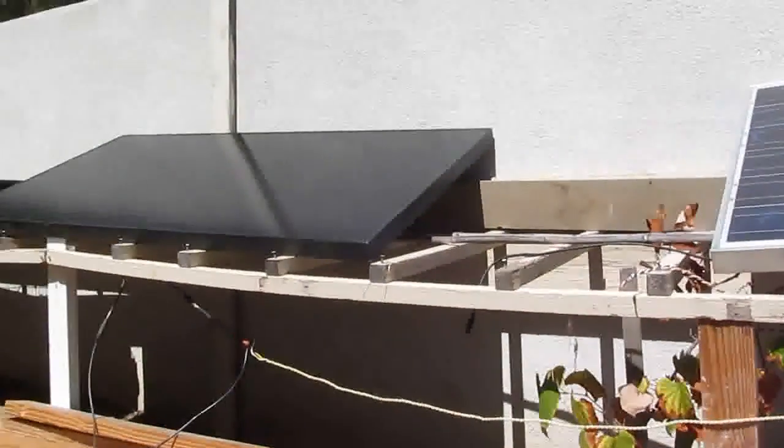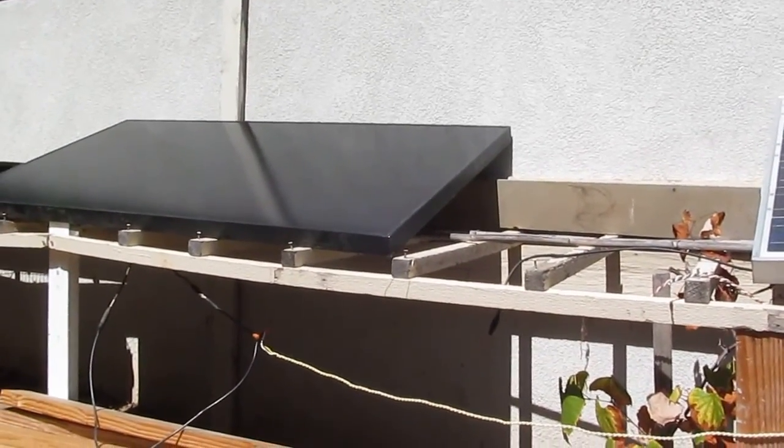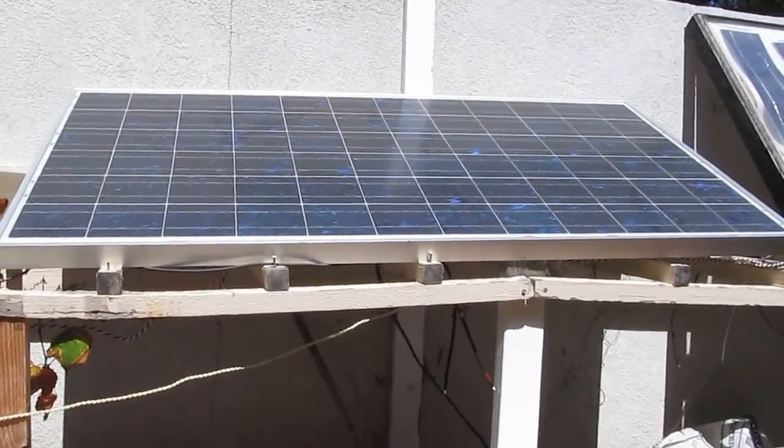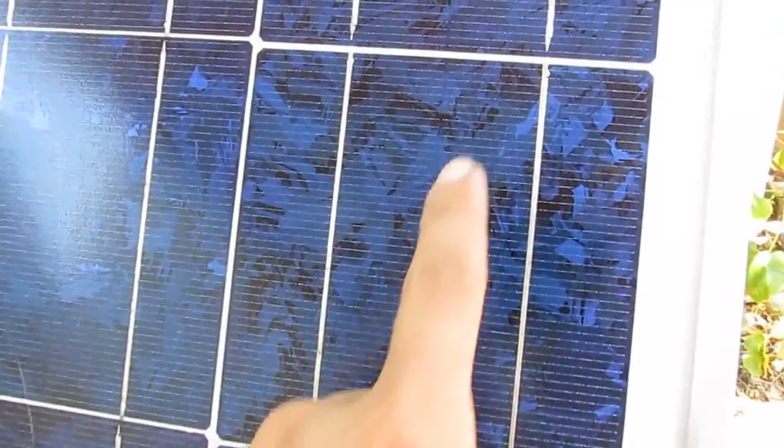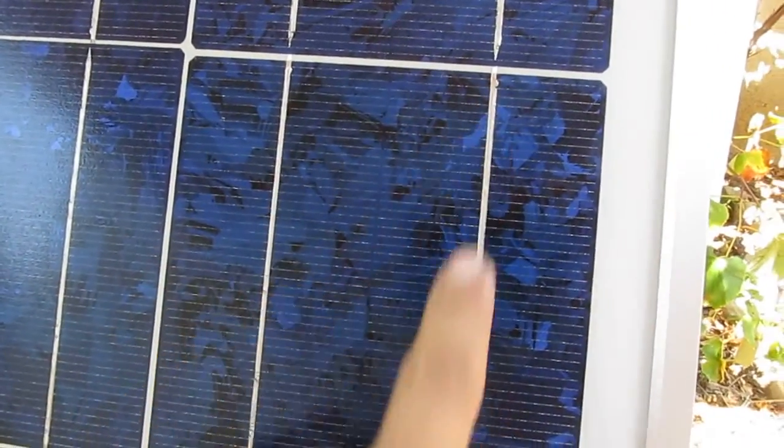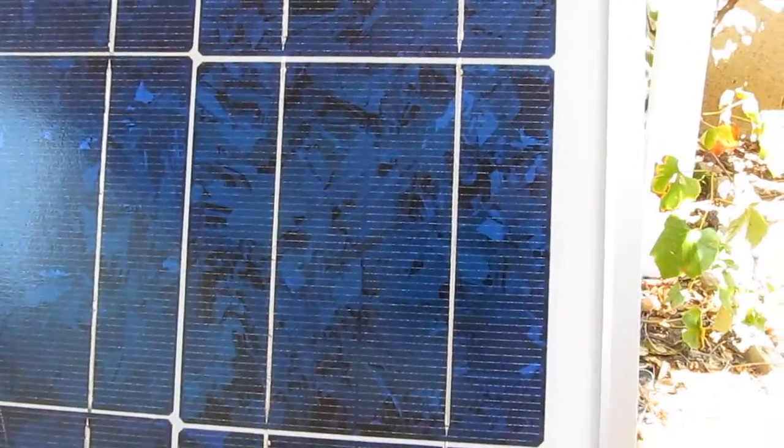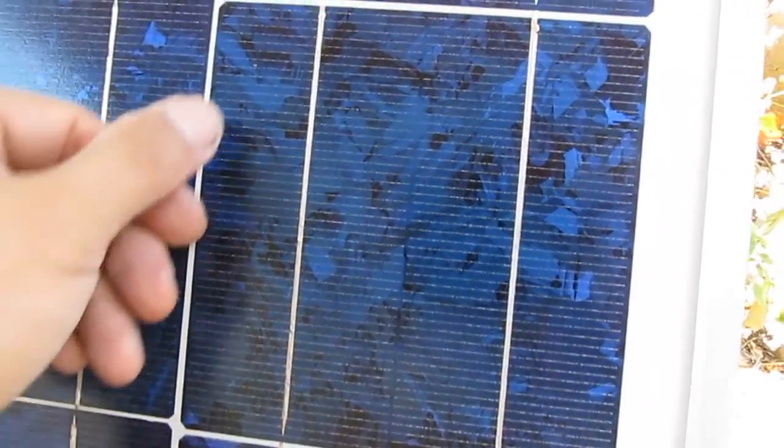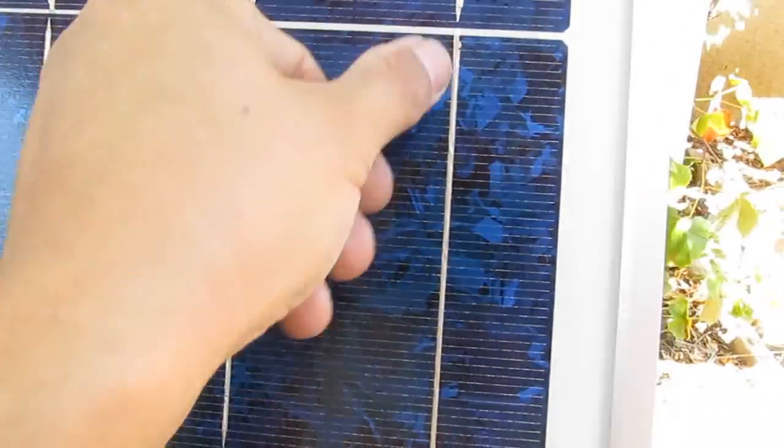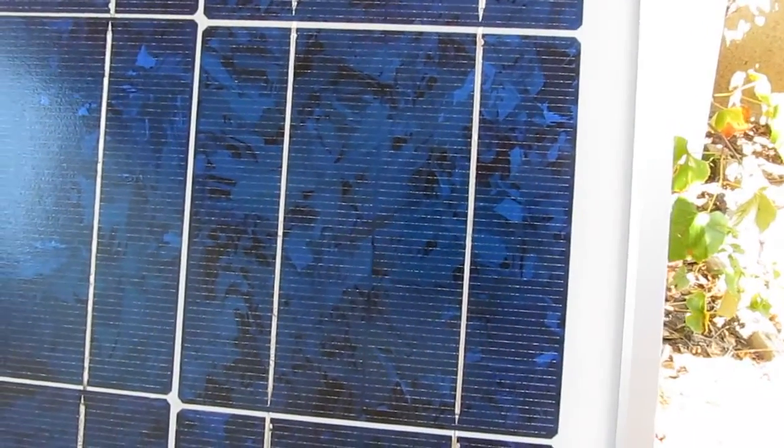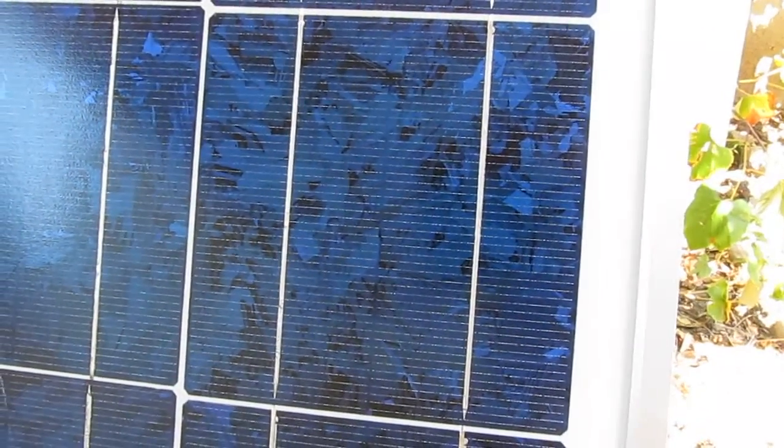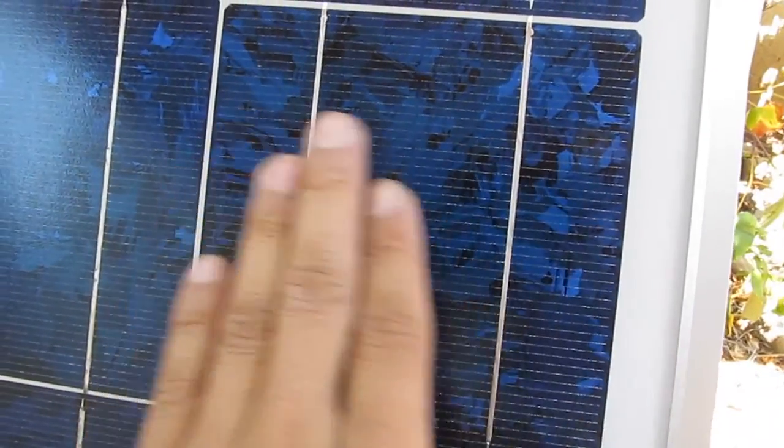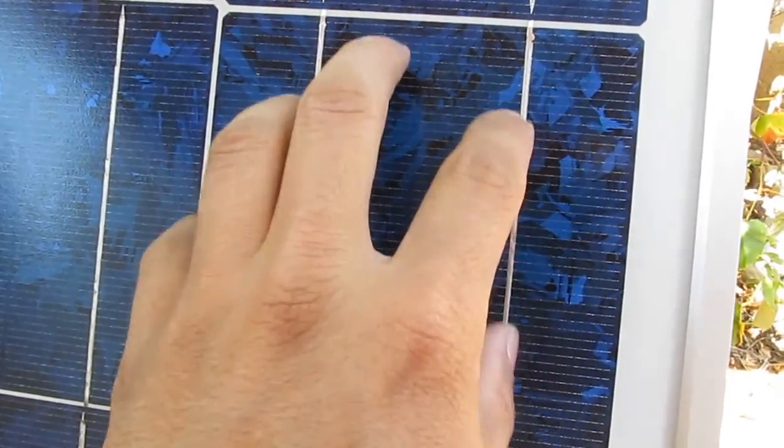And I think that's because for the solar cell, this tapping wire here is also shading the panel itself. It's covering parts of the panel. So it creates shades too. So that's why the other solar cell without the tapping wire on the front can produce a bit more voltage.